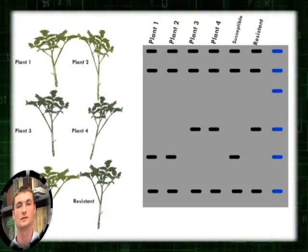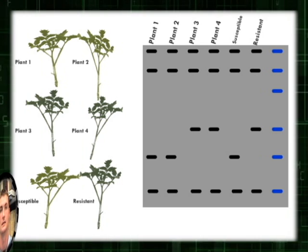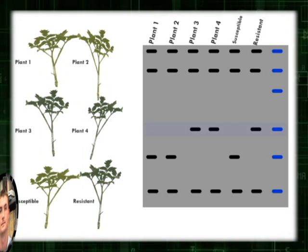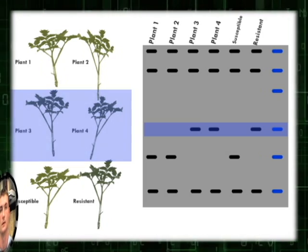Selecting on the basis of fragment size allows us to identify resistant individuals at the seedling stage. In this panel, resistant individuals contain the larger fragment.